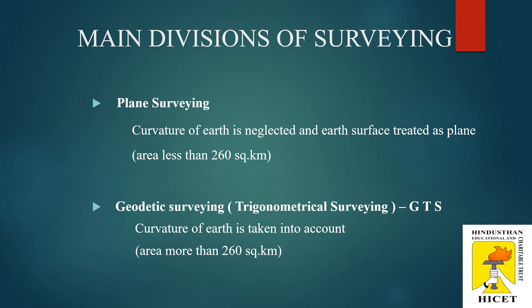First one is plane surveying. In plane surveying, the effect of curvature of the earth is neglected and the earth's surface is treated as a plane. The degree of accuracy is comparatively low. Generally, when the surveying is conducted over an area less than 260 square kilometers, it is treated as plane surveying. Plane surveying is very widely used in survey works conducted for engineering projects.